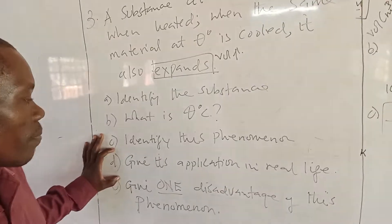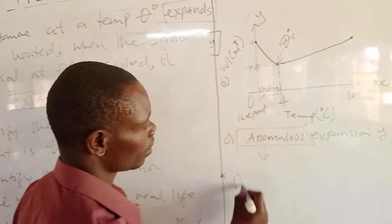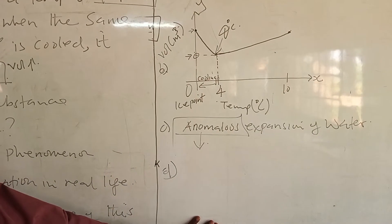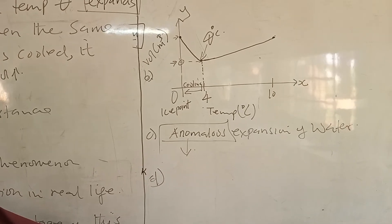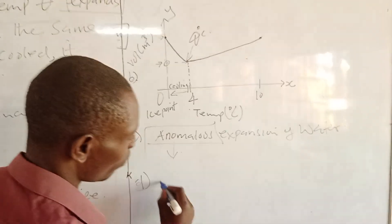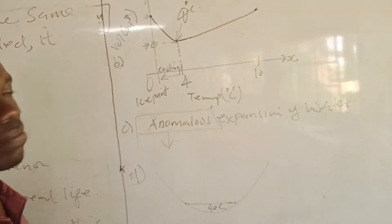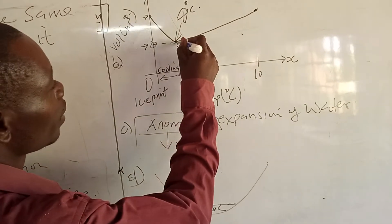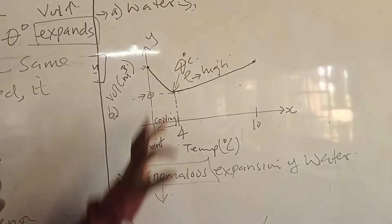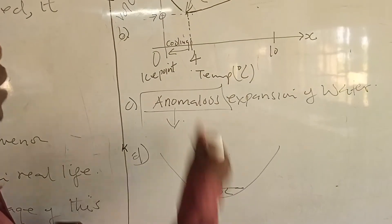Now, give one application of anomalous expansion of water in real life. This property of water is useful to aquatic life. Remember, in very cold areas, sometimes the water gets covered with ice. This means that the water below the pond is warm at 4 degrees Celsius because when the volume is low, meaning density is high. If the density of water at 4 degrees is high, it will sink to the bottom.